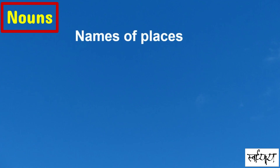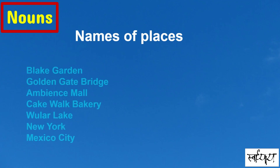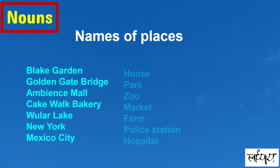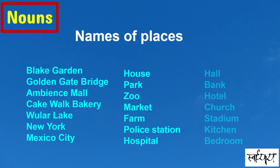Names of places — specific places like Blake Garden, Golden Gate Bridge, Ambience Mall, Cakewalk Bakery, Woola Lake, New York, Mexico City, or in general like a house, park, zoo, market, farm, police station, hospital, hall, bank, hotel, church, stadium, or the rooms in your house like kitchen, bedroom, living room, etc.